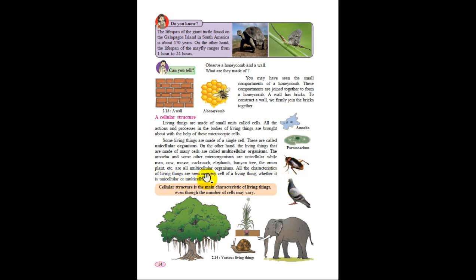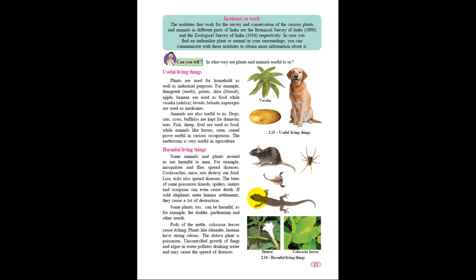All characteristics of living things are seen in every cell, whether unicellular or multicellular. Living organisms are made up of cells. Non-living things are not made up of cells. Cellular structure is the main characteristic of living things. Even if someone dies, when we dissect that body we will get a cellular structure showing it is a type of living organism.